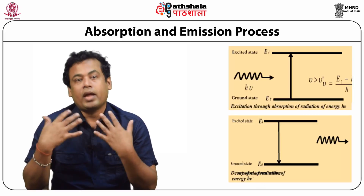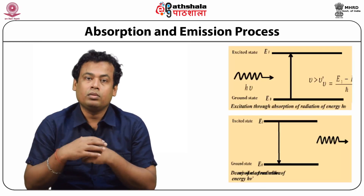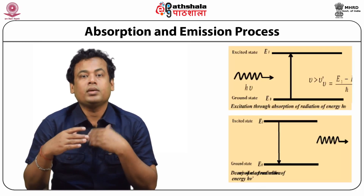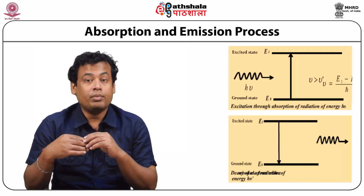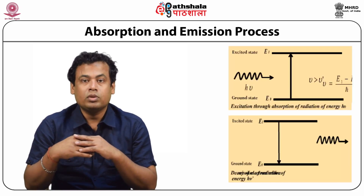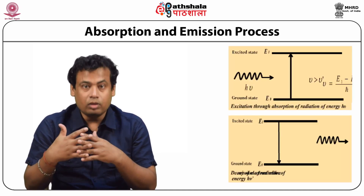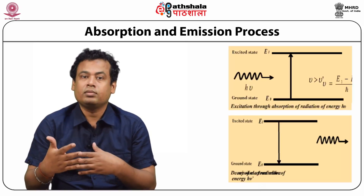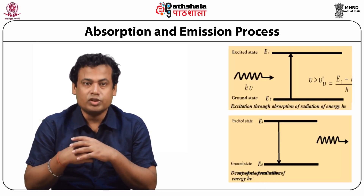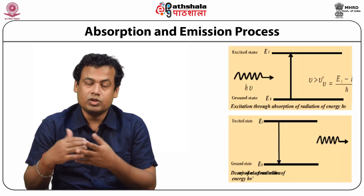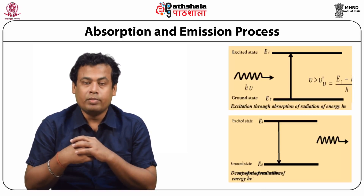The second process is emission. The electron in the excited state is not stable, and the average lifetime of an electron in the excited state is about 10 to the power minus 5 to 10 to the power minus 8 seconds. After that, the electron decays to the ground state with emission of light of frequency lower than the incident frequency. This process is called emission and is shown in the figure by a downward arrow.